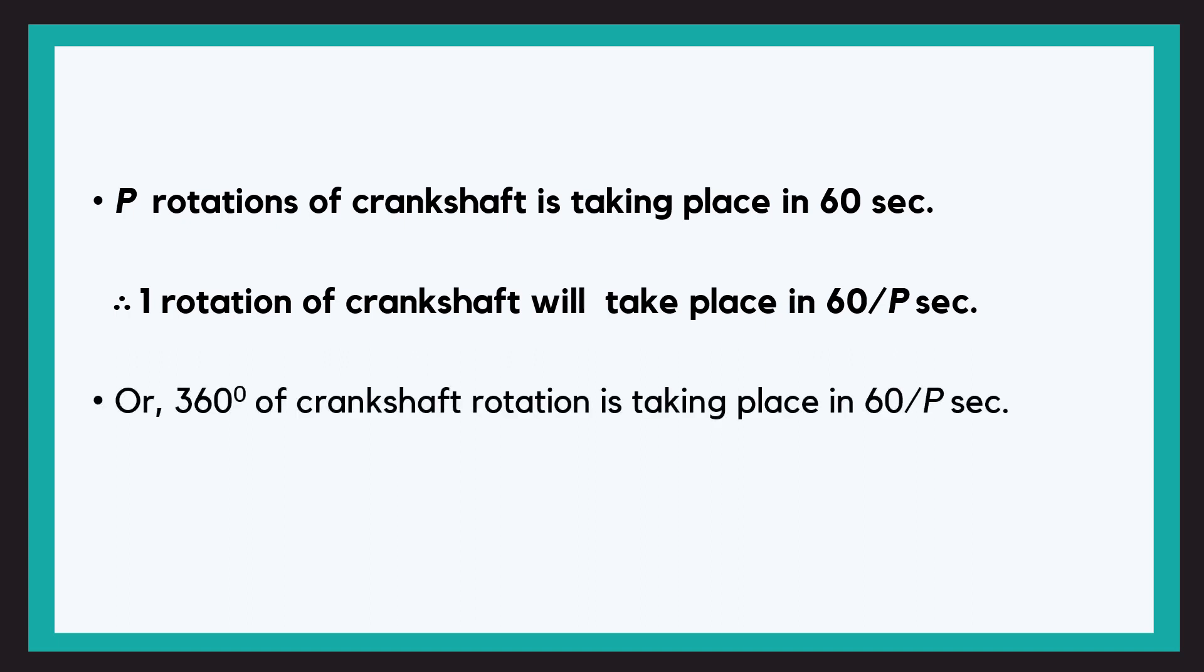Now one rotation means how many degrees? 360. Easy. So 360 degrees of rotation takes place in 60 upon P seconds. So one degree rotation will take place in how many seconds? Again that will be divided by 360. So it will be 60 upon P divided by 360. Simple unitary method. So after we solve it, we get 1 upon 6P.